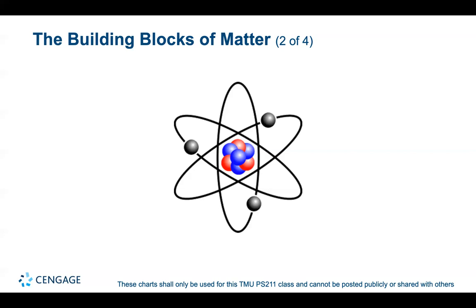The number of protons in a nucleus determines the element. One proton means hydrogen; two protons means helium. Different numbers of neutrons give different isotopes. Except for hydrogen, all nuclei contain neutrons, which together with protons interact through the strong nuclear force, counteracting the repulsive electrical force between protons.